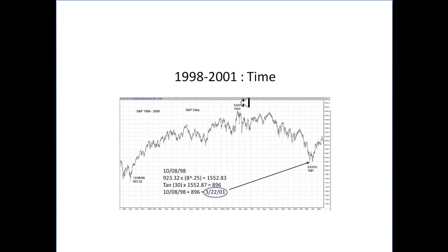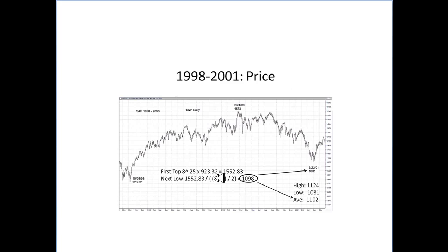Having previously determined the high price to be $15.52.83, if we now theoretically take that theoretical price and multiply our tangent of 30 times that, we get the number 8.96. If we use that as a time cycle and go back to our origin low and add it in number of days, we get the next bear market swing low of March 22nd. Now, using a little math again on our square root of 8, from the high price, $15.52.83, $15.53, if we divide it by the square root of 8 divided by 2, we get a number of 1098, and we see we had a wide-ranging bar that day from $1,124 to $1,081, but the average on that date was $1,102, only four points off what the theoretical low should have been on the date $3.22, which the previous slide calculated as being the date of the low.